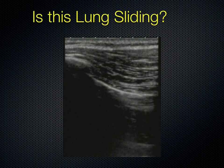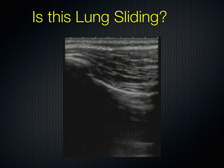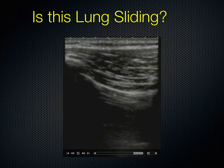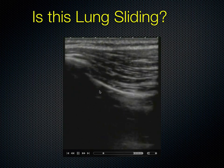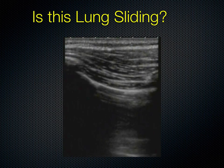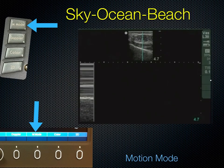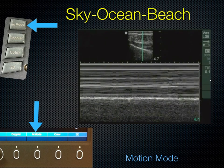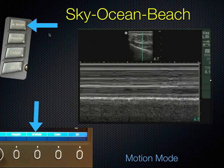So is this lung sliding? Here you have muscle, rib, rib, pleural line. Do you see the shimmering ants marching along? And you can see these minor perpendicular projections or minor B lines. Now, the Sky-Ocean-Beach we're looking for: you can place an M-mode line — press the M-mode button once, position your M-mode line between the two ribs across the pleural line, press it again, and you will get a representation of everything going on at that line over several seconds.